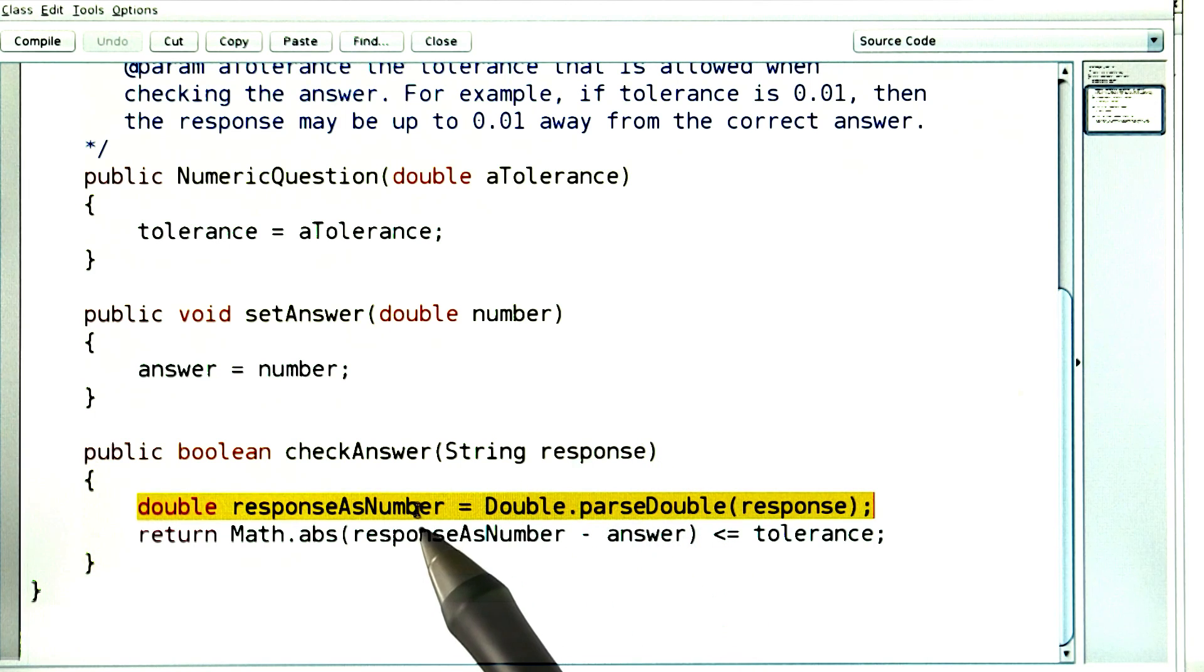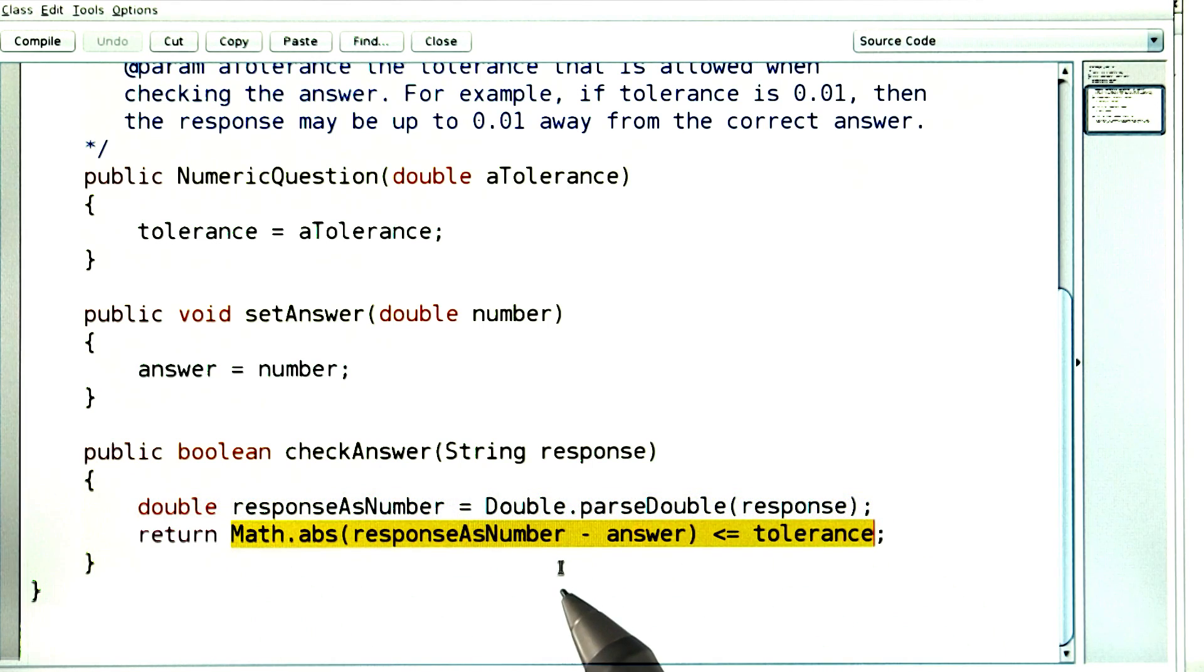I convert it to a number by calling double parse double. And now I check whether that number is close enough to the actual answer. You've learned in lesson 4 how to do that.